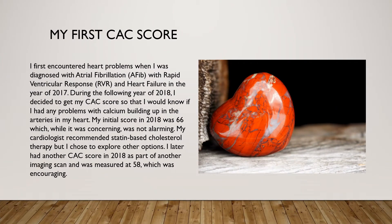I first encountered heart problems when I was diagnosed with atrial fibrillation with rapid ventricular response and heart failure in 2017. During 2018, I decided to get my CAC score to know if I had calcium buildup in the arteries of my heart. My initial score in 2018 was 66, which, while concerning, was not alarming. My cardiologist recommended statin-based cholesterol therapy, but I chose to explore other options. I later had another CAC score in 2018 measured at 58, which was encouraging.